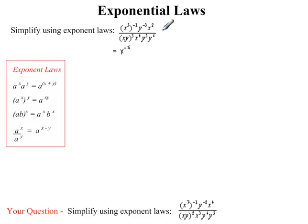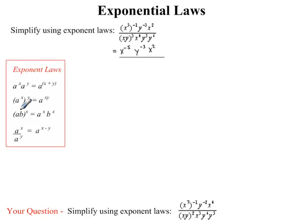Then I'm going to write out whatever we have left in our numerator: y to the exponent negative 3, and x to the exponent 2. Looking at our denominator, we have x times y, which is all raised to the exponent 3. Looking at our third exponent law, we have ab which is all raised to the exponent x. In order to simplify this, you bring the exponent into the brackets of each base, resulting in a to the exponent x times b to the exponent x. In our case, we bring the 3 into the base, giving us x cubed.